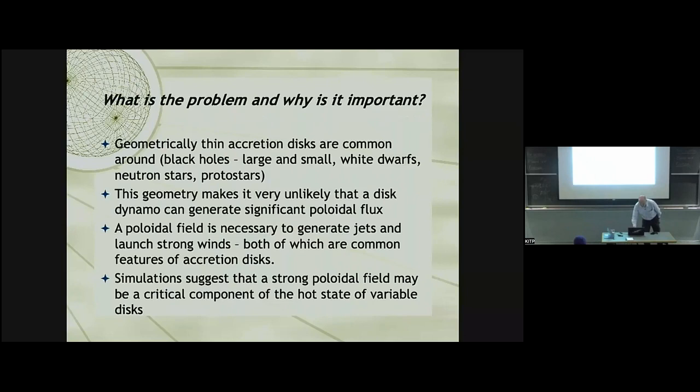So the problem we're going to talk about today is the problem of having a geometrically thin disk of material accreting onto some central object. Many examples of this because of the geometry. It's very unlikely that there's a dynamo that generates poloidal flux, this vertical flux threading the disk. But there appears to be in many cases quite a lot of poloidal flux threading the disk anyhow.